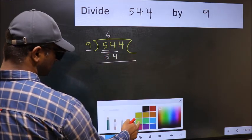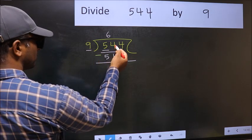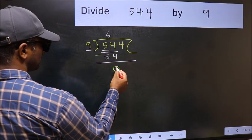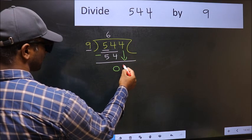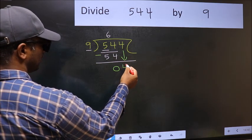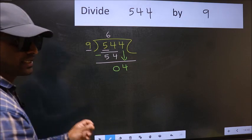Now you should subtract. 54 minus 54, 0. After this, bring down the beside number. So 4 down. After this step, the mistake happens.